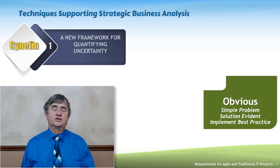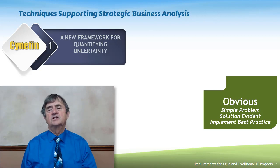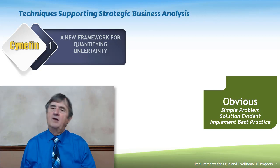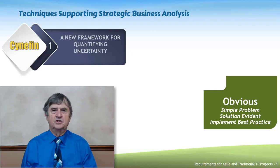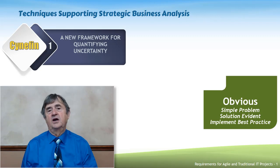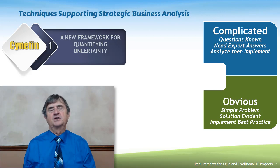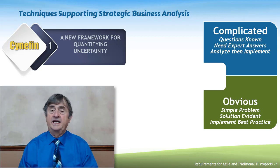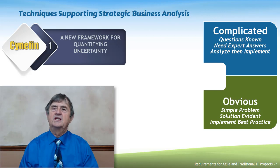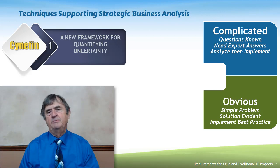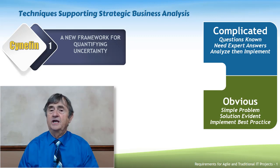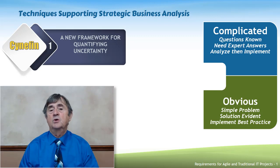Once we've analyzed the situation, we try to identify what is obvious or simple — meaning there's only one solution and all you have to do is go out and do it. If things are not in the obvious or simple domain, they might be in the complicated domain. The complicated domain is something we need to analyze; we know what questions to ask but don't have the answers, so we need to find experts in the field and interview them.